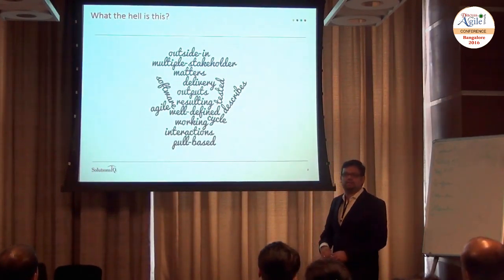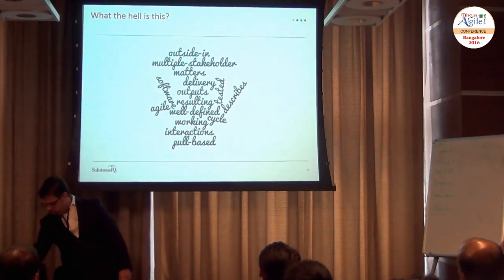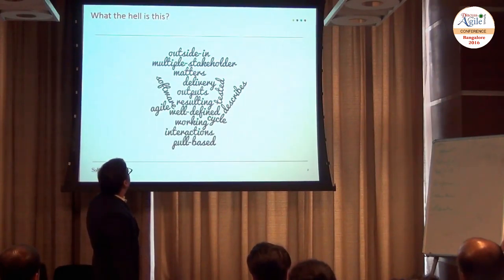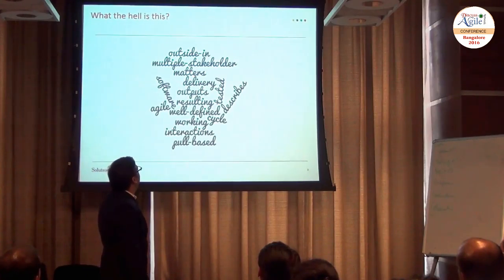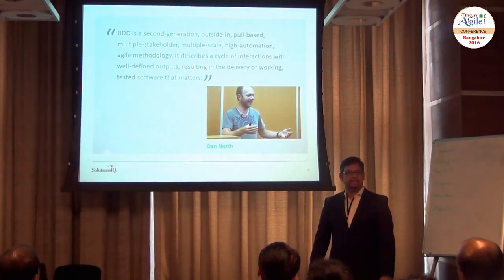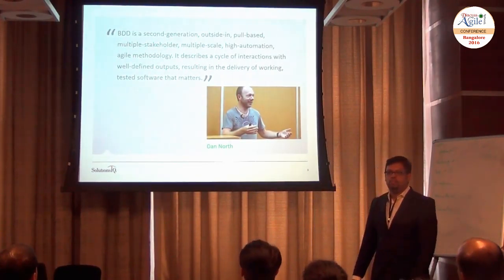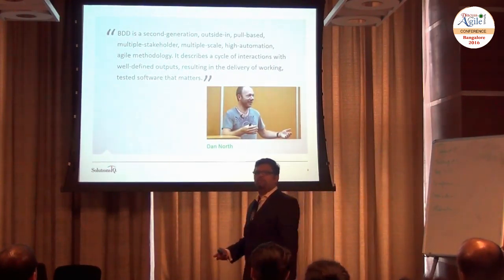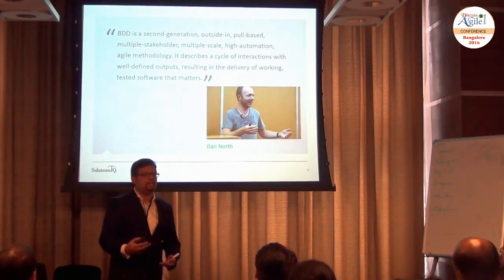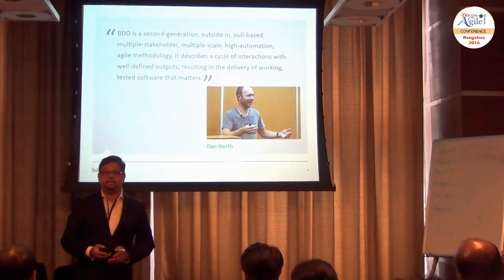What are the scrambled lines of jargon so far? It's written outside-in, multiple stakeholders, pull-based, well-defined interactions, agile software delivery, outputs tested, software that matters. This is what Dan North thinks about behaviour driven development. BDD has gone through 10-plus years of inspected-and-adapted phases, and this is the latest definition. Anything starting with DD is second generation.